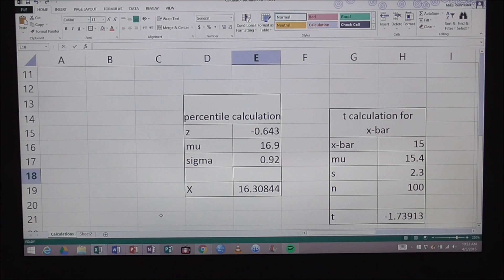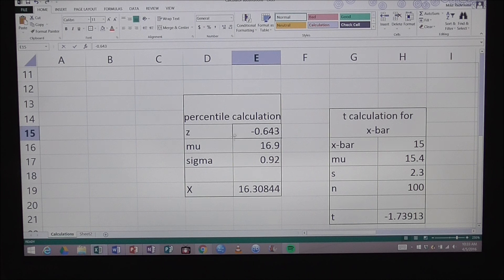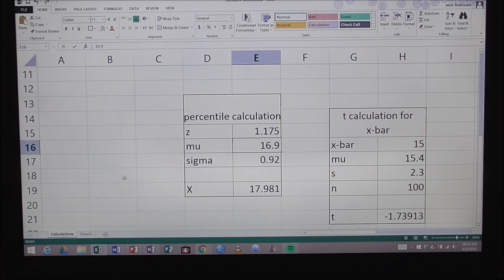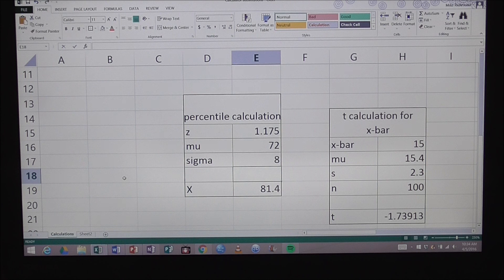With that information, I can go ahead and calculate what the 88th percentile is again by putting in the appropriate values for each of these variables. z is 1.175, mu was 72, and sigma is 8. After I plug those in and hit enter, it says a score of 81.4 on the exam is going to be in the 88th percentile.